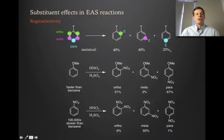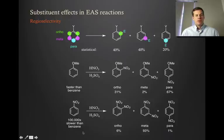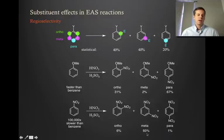Looking at another example — nitration of nitrobenzene — this is very much slower than benzene for the reasons we discussed in the last video. In terms of the ratio that comes out, we see very little of the ortho, very little of the para, but we see mostly the meta product. So these ratios are very different than what a statistical mixture would give us.